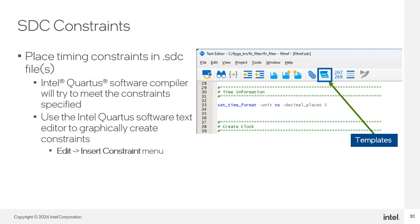It is highly recommended that you properly constrain your designs using SDC design constraints. Constraints describe the behavior of the circuit — for example, how fast you plan to run the clock and how much external delay there is for each data pin. You should place all constraints in the SDC file associated with the project so Intel Quartus Prime software will try to create a netlist that meets the specified constraints. If you're new to SDC and are not familiar with the syntax, use the Intel Quartus Prime Software text editor, which offers an Edit > Insert Constraint menu to graphically enter SDC constraints and templates for quickly inserting commands.